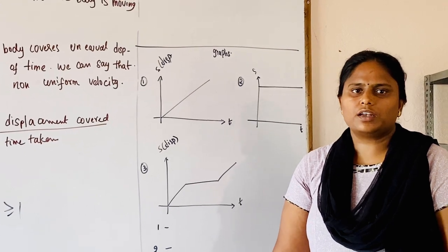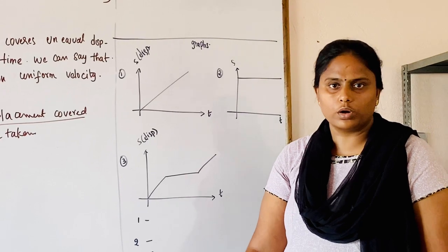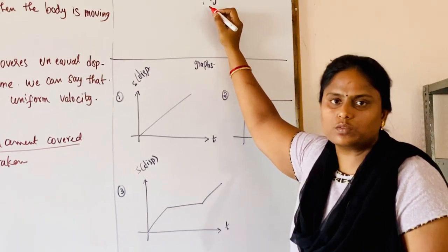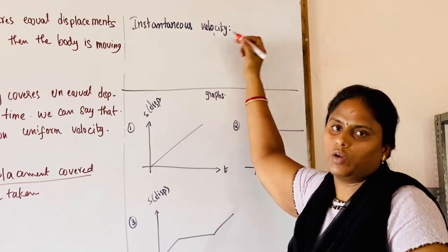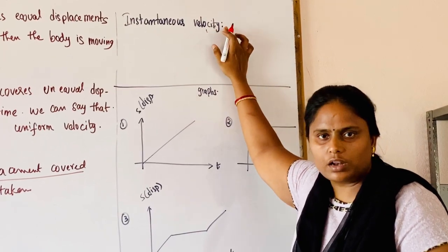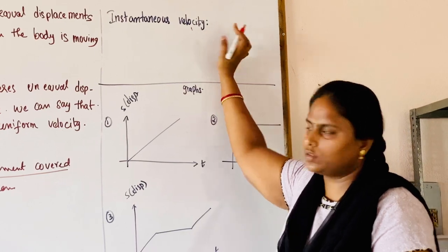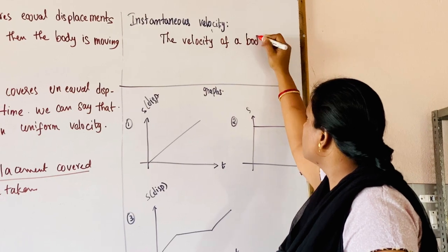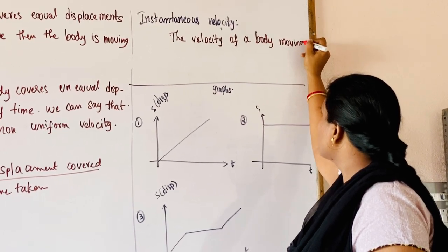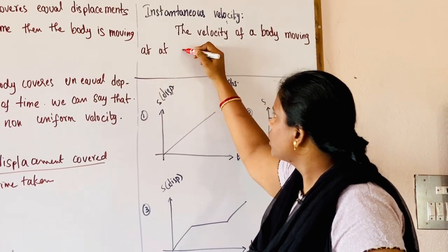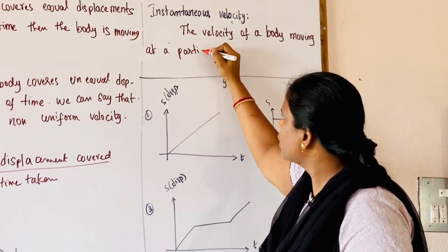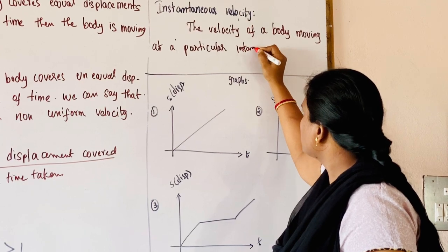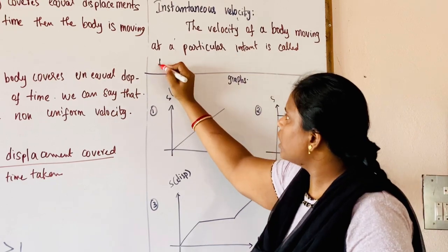Now we are going to see one more term — instantaneous velocity. Instantaneous velocity means: suppose a body is moving on a road, and if you want to find its velocity at a particular point in time, we consider the instantaneous velocity at that particular point. The velocity calculated at that instant is called instantaneous velocity.